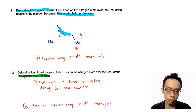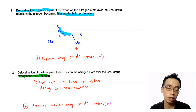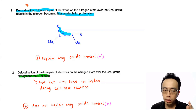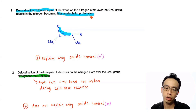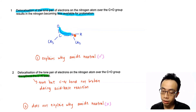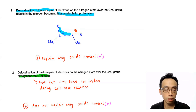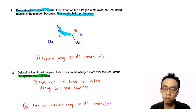Now we know why amides are neutral. Let's run through statements 1, 2, and 3 to see which explains this. Statement 1: delocalization of the lone pair of electrons on the nitrogen over the C=O group results in the nitrogen becoming less available for protonation. This is true — it is exactly what we discussed. The lone pair on nitrogen is delocalized into the acyl group very effectively, so it will not be available for donation and does not accept H⁺. This explains why amides are neutral. Statement 1 is true and part of the answer.